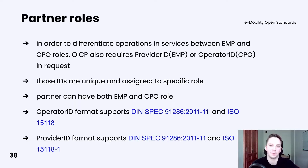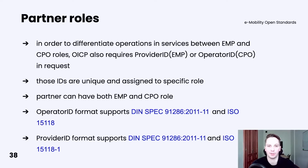You as a partner may also have both roles, CPO and EMP. In this case, you need to provide only one value, either provider ID or operator ID, in each request. Operator ID and provider ID have a similar format but with small differences, which we will see in examples later. In general, they are created according to the ISO 15118 specification.